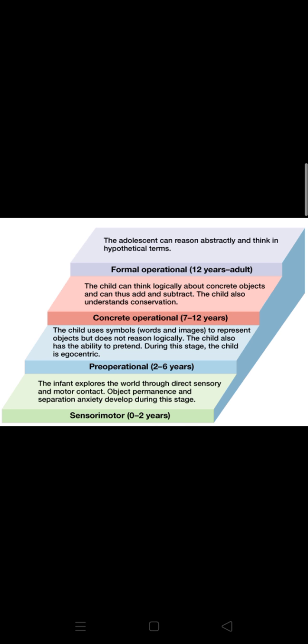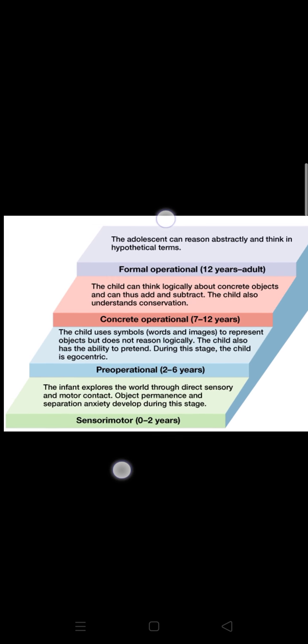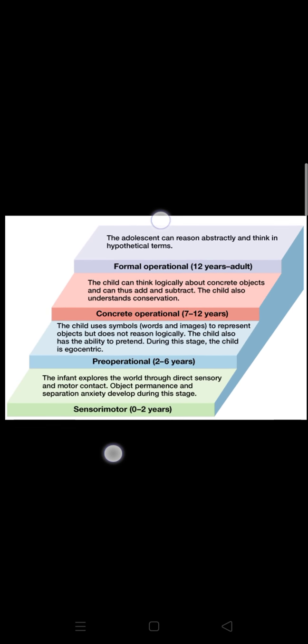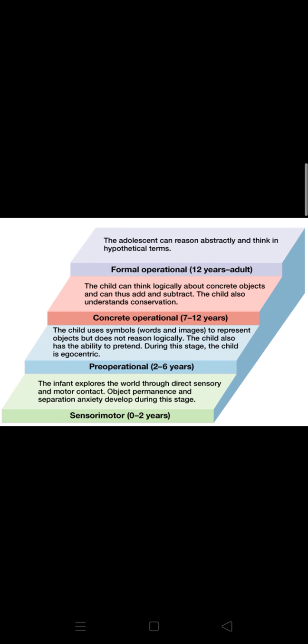Assalamualaikum, today we are going to study Piaget's theory. I have selected this diagram — you can see the four stages of Piaget's theory. If you are going to appear in the SST test, this could be asked in your MCQs. Sensory motor lasts from zero to two years, pre-operational starts from two and lasts to six years, concrete operational starts from seven and ends at twelve, and formal operational starts from twelve and ends in adulthood.